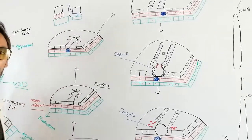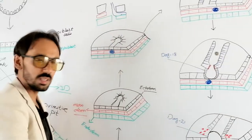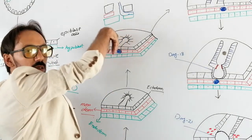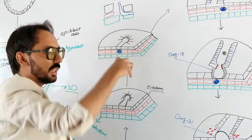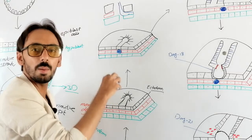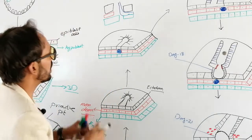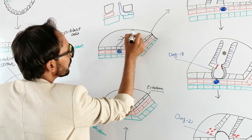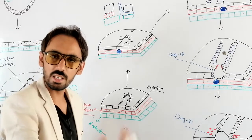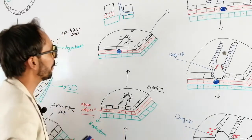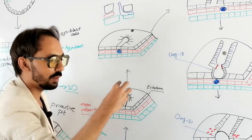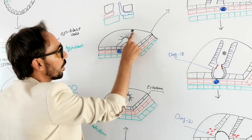How does notochord formation occur? The ectodermal cells go deeper inside through the primitive pit, and then they move cranially — or towards the pre-cordal plate. Here is the pre-cordal plate. I will tell you the different derivatives of the pre-cordal plate in the next lecture.